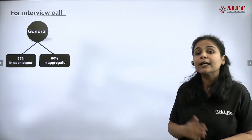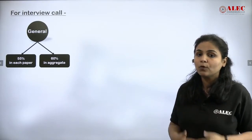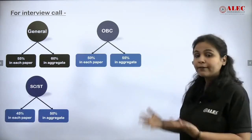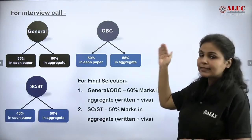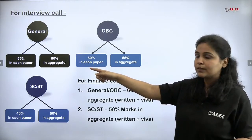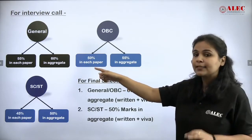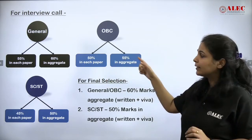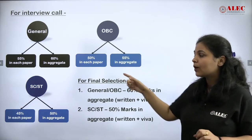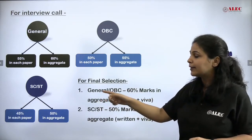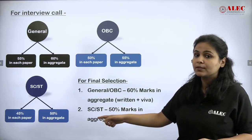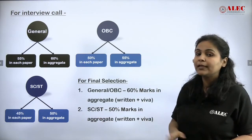They have given the criteria for selection — how you get an interview call and how the final selection is made. For an interview call, if you are in the general category, you need a minimum of 55% in every main paper and 60% in aggregate. If you are in the OBC category, the requirement is a minimum of 50% in every paper and 55% in aggregate. If you are in the SC/ST category, it is 45% in every paper and 50% in aggregate. This is the minimum criteria for the interview call.